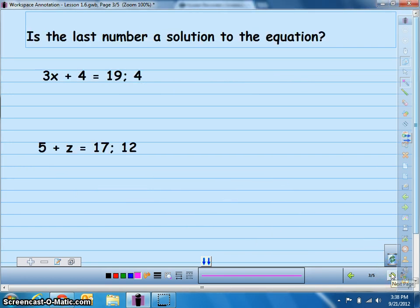So let's go on. Is the last number a solution to the equation? If we were to take 4 and plug it in here, would it make the sentence true? Let's check it out. Remember 3x? That means 3 times x. When we substitute that 4 in, we're going to take 3 times 4 plus 4 equals 19.